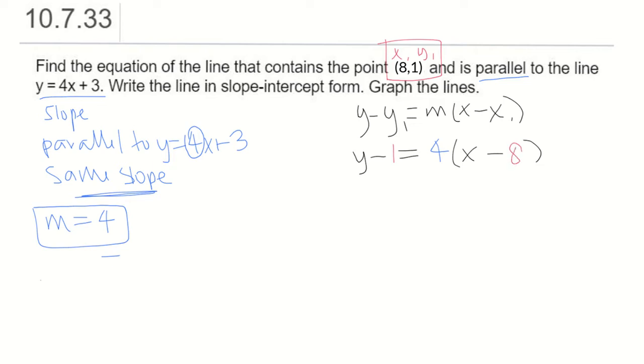After we have that, we just want to simplify our formula, get it in y equals mx plus b. To do that, we would distribute the 4 on the right side. That would give us y minus 1 equals 4x minus 4 times 8 is 32.